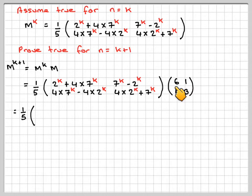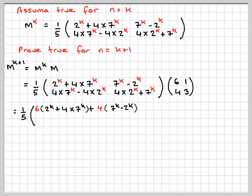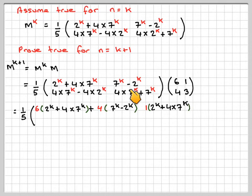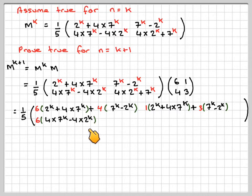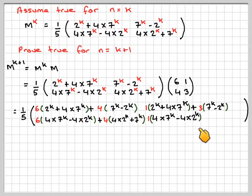We're going to do this times 6: so 6×(2k + 4×7k), plus 1×(4×7k − 4×2k). Then 1×(2k + 4×7k) plus 3×(7k − 2k). And then for the lower entries: 6×(4×7k − 4×2k) plus 4×(4×2k + 7k), and 1×(4×7k − 4×2k) plus 3×(4×2k + 7k).